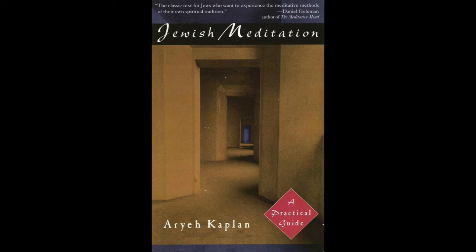One important aid in visualization is the name of the object to be visualized. If you are trying to visualize the Aleph, you may repeat the word Aleph to yourself periodically. You may even wish to repeat the word over and over as if it were a mantra. This not only relaxes the visual field, but locks the mind onto the Aleph. Repeating the word Aleph as a mantra will bring the letter into the mind's eye.